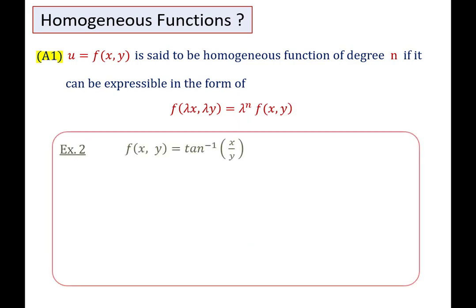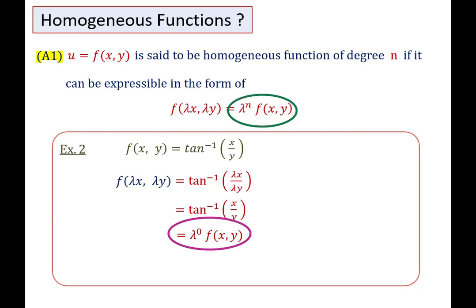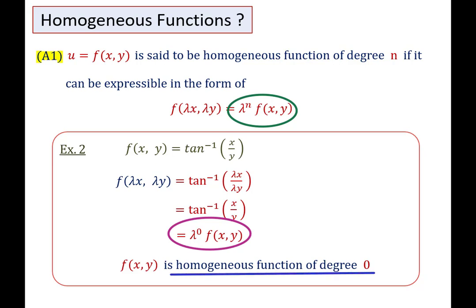Next example: F(X, Y) = tan⁻¹(X/Y). Replacing X by λX and Y by λY, we get F(λX, λY) = λ⁰ F(X, Y), which is in the form λ^n F(X, Y). So the function F(X, Y) is a homogeneous function of degree 0.